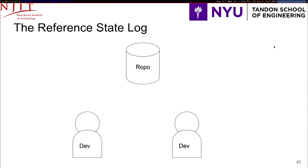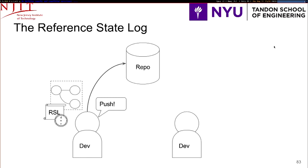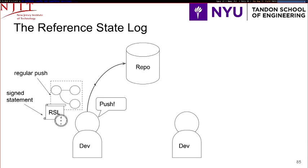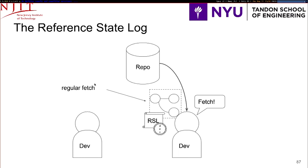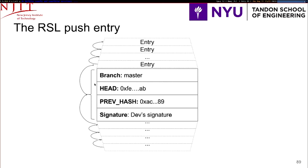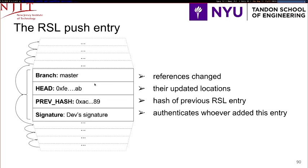A Reference State Log is a really simple protocol addition to Git. Instead of doing a regular push, which only sends the objects, it also pushes a signed statement that says: 'these are the references I'm changing, and this is what you should be seeing now.' When these changes make it to the other side, the objects are transmitted as usual, along with consistency assurance that the references were changed by an authenticated user. A reference state log is basically a series of RSL push entries. These entries contain: what reference is changing (like branch master), what commit object the branch should point to, a hash of the previous entry so an attacker cannot remove or reorder entries, and finally, a signature authenticating the user who made this specific change.